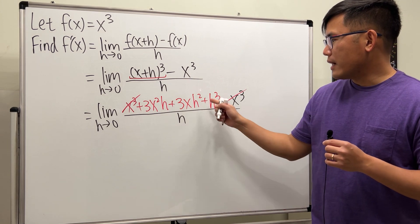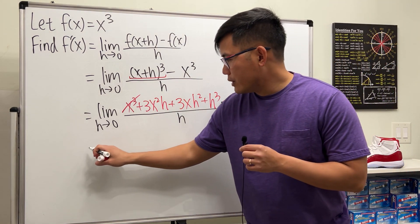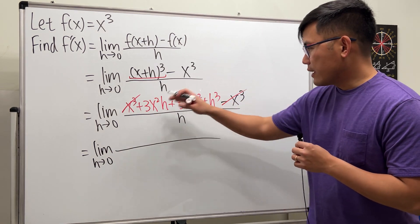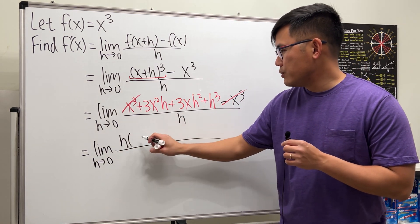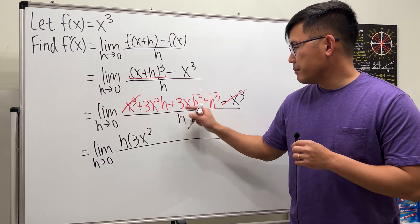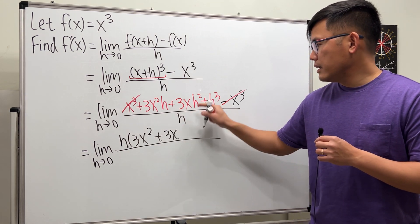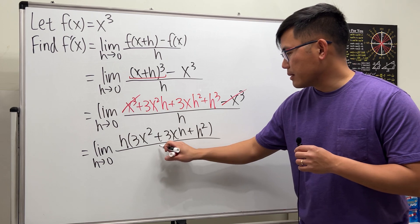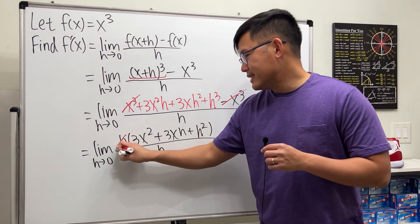And we can factor out an h on the top. So this right here is the limit as h approaching zero. Factoring out h, we get 3x squared plus 3xh plus h squared, and then on the bottom we have that h.